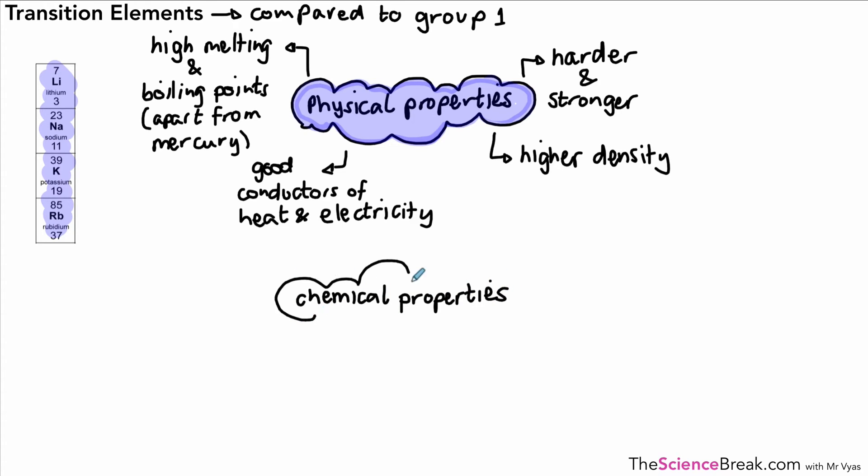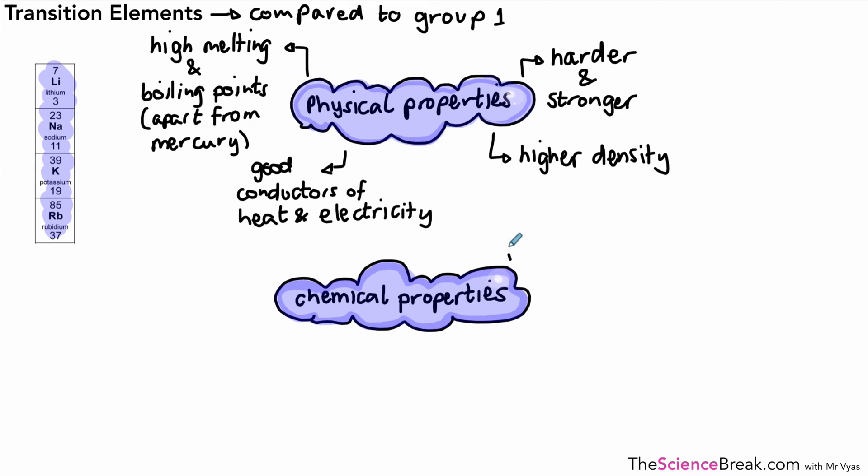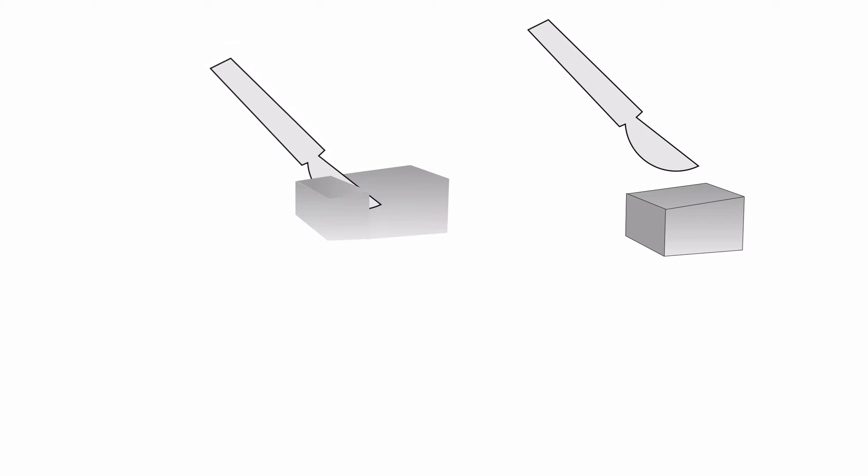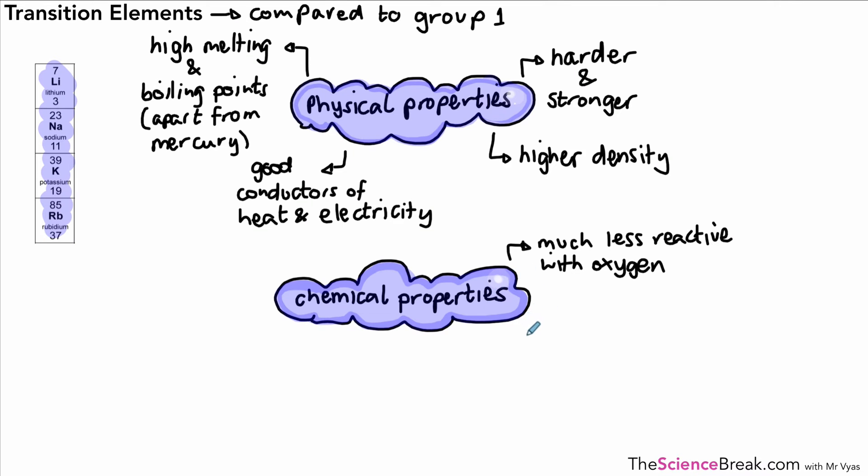So let's look at some of the chemical properties of these transition elements. The first one is that transition elements are much less reactive with oxygen. You remember that the Group 1 elements we looked at reacted quite quickly. On the left there we've got lithium, and we could cut it and slice it quite easily with a knife. When you expose the metal, it would very quickly, within seconds, react with the oxygen in the air and become tarnished. If we tried the same thing with iron, which is a transition element, you wouldn't be able to cut it very easily at all. And in fact, while it does react with oxygen in the air to rust, it does take a much longer time, and some of the transition elements won't react with oxygen in the air at all.